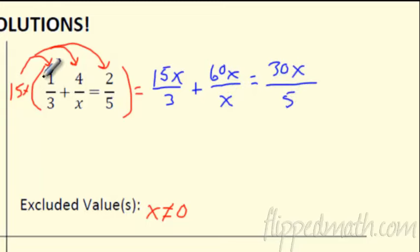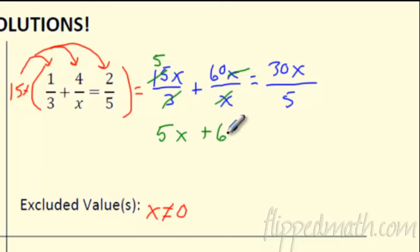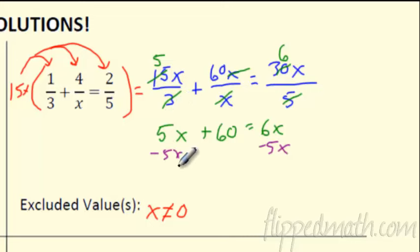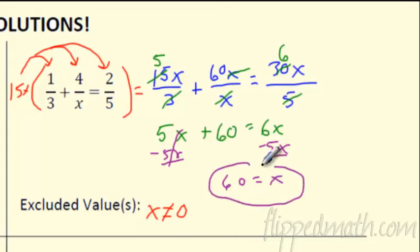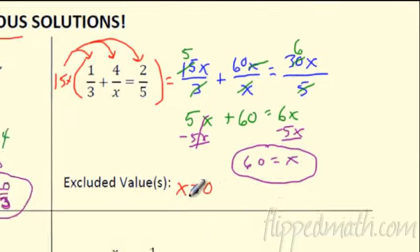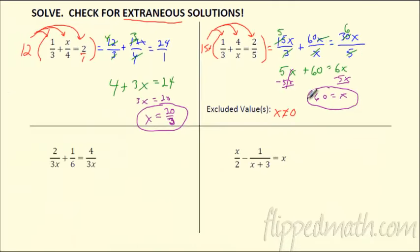Distribute to the top and leave the bottom alone, then cancel. Three goes into 15 five times, leaving 5x. The x's cancel, so we get plus 60. Five goes into 30 six times, giving 6x. Fractions are gone. Now get all x's on one side: subtract 5x from both sides — we're looking at 60 equals x, so x equals 60. That's okay because x isn't zero. You can plug 60 back in and verify the fractions add up. It checks out.